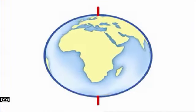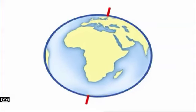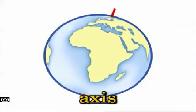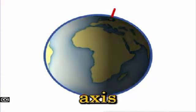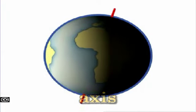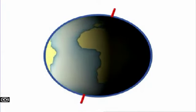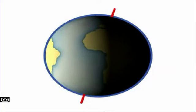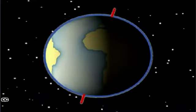Another imaginary line runs through Earth from the North Pole to the South Pole. It is Earth's axis. Earth spins on this axis once every 24 hours. As Earth spins or rotates, some parts of it face the Sun and have daylight. Other parts face away from the Sun and have nighttime.